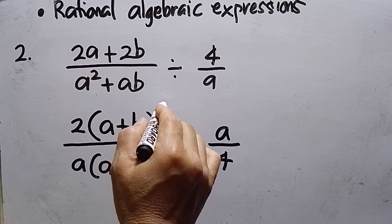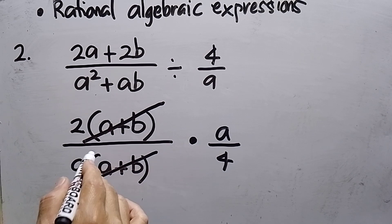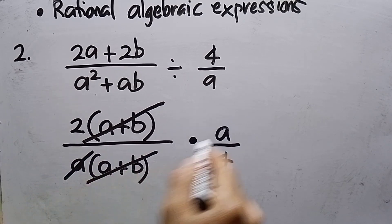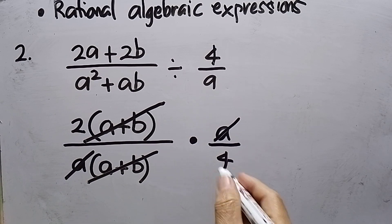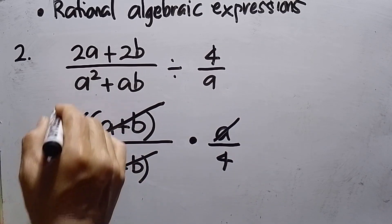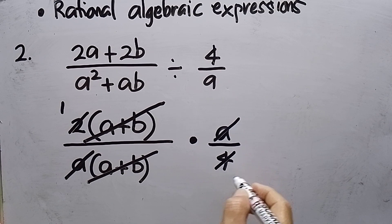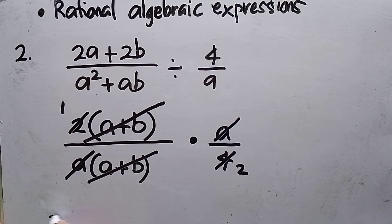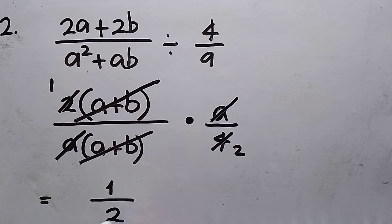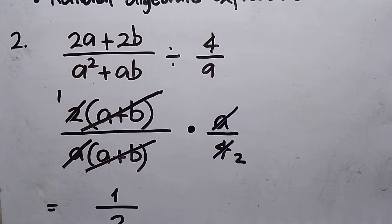The (a + b) factors cancel out. Then 2 and 4 can be reduced by dividing by 2, giving 1 and 2. So the answer for number 2 is 1 over 2.